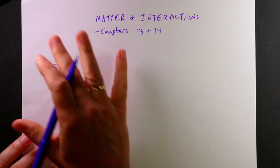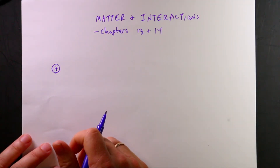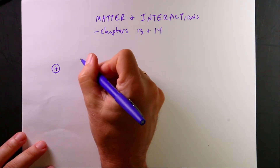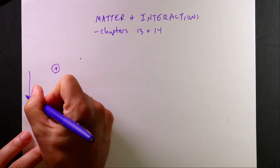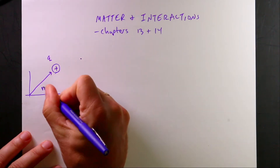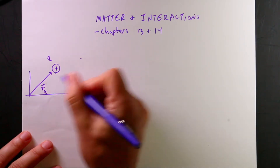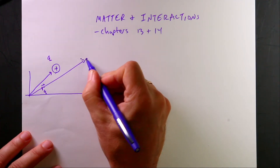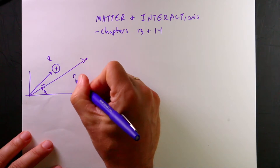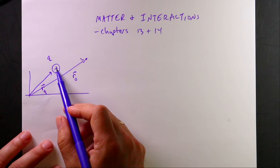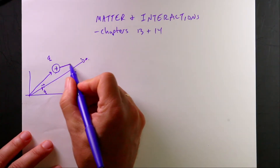...we can imagine the space around that charge as having some type of field of influence — we call that the electric field. Let's do this in the most explicit way possible. Say this is the charge q and the vector location of that is r_q, and then I have a point right there — I'll call that r_o for the observation location. I want to find the electric field due to this charge at that point, so I need this vector r.